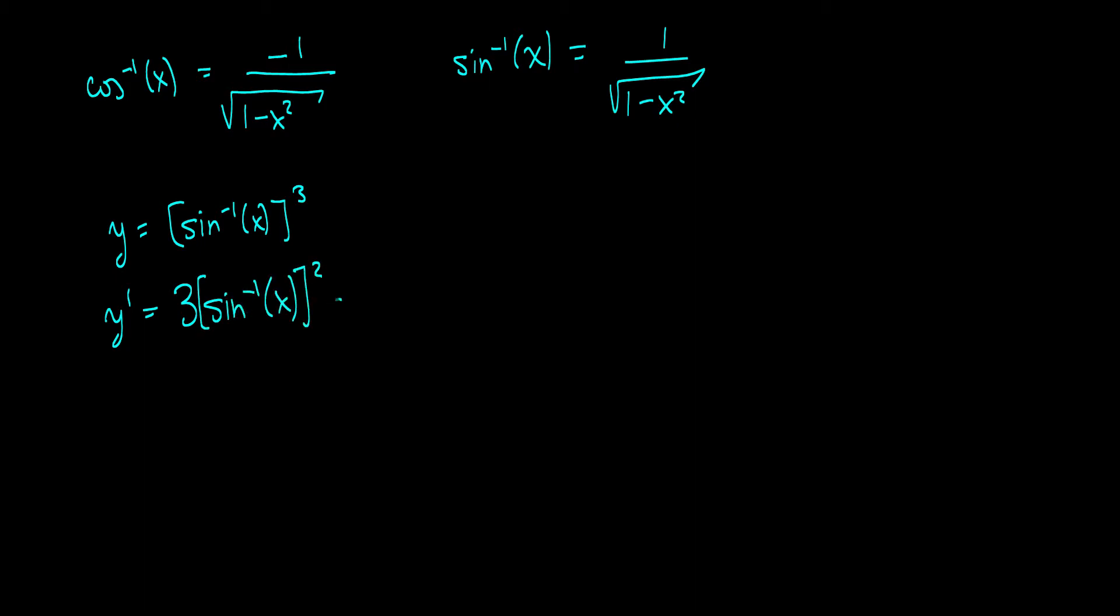multiplied by the derivative of the inside, which is the inverse sine, which is 1 over the square root of 1 minus x squared. So, there's your derivative of this function here. That's it. That's all there is to it.